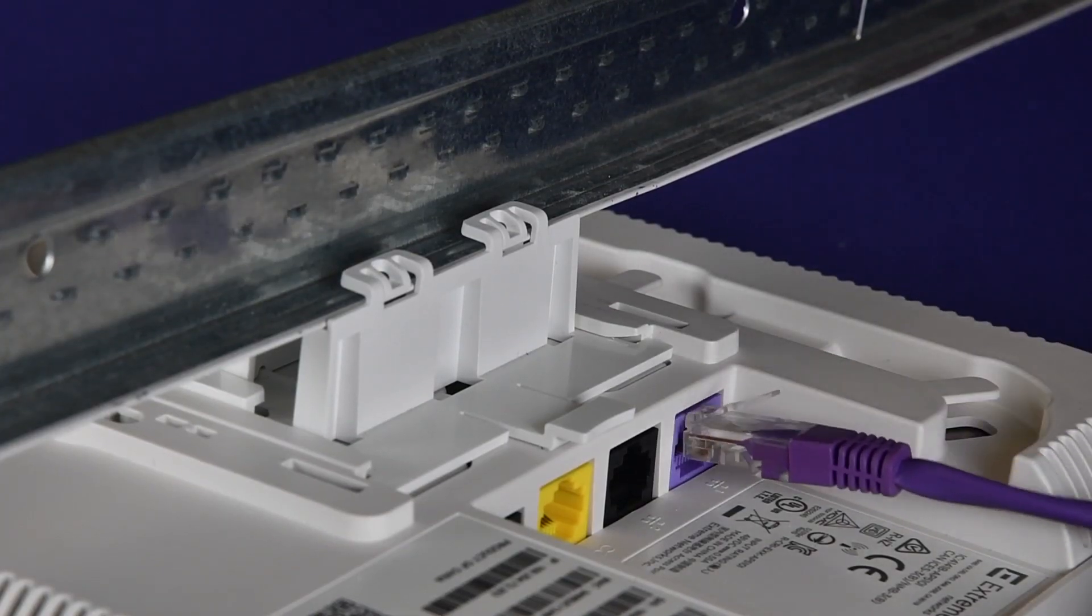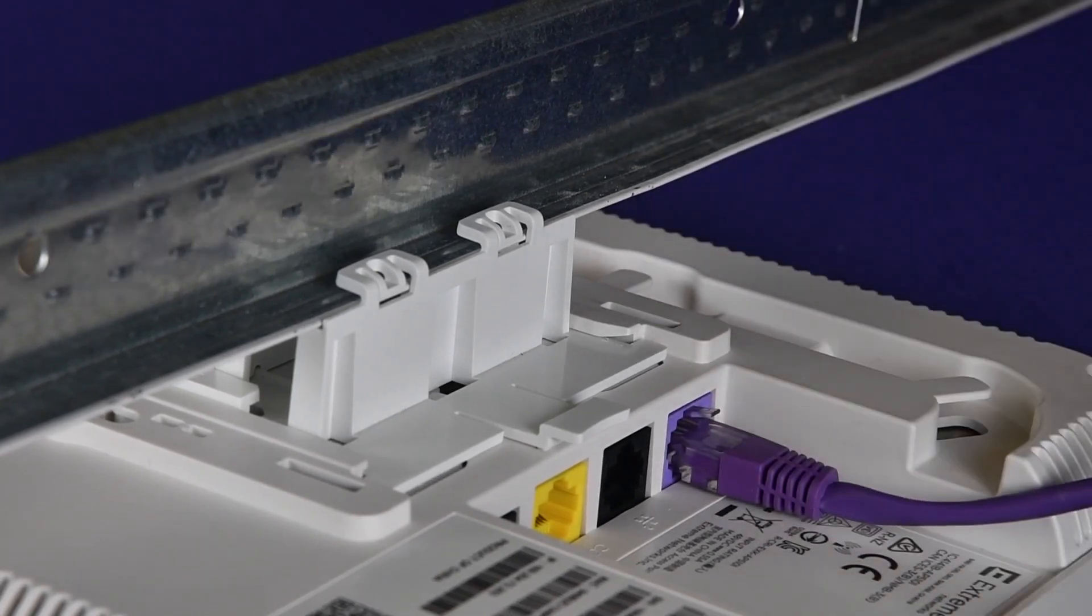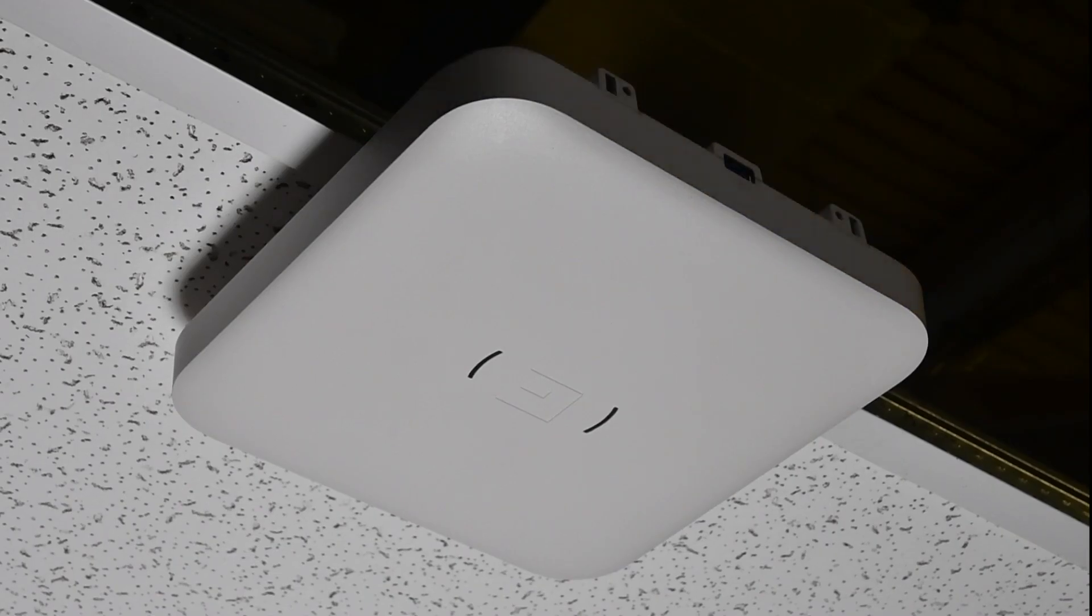Attach the Ethernet cable's RJ45 connector to the N1 port. Replace the ceiling tile.